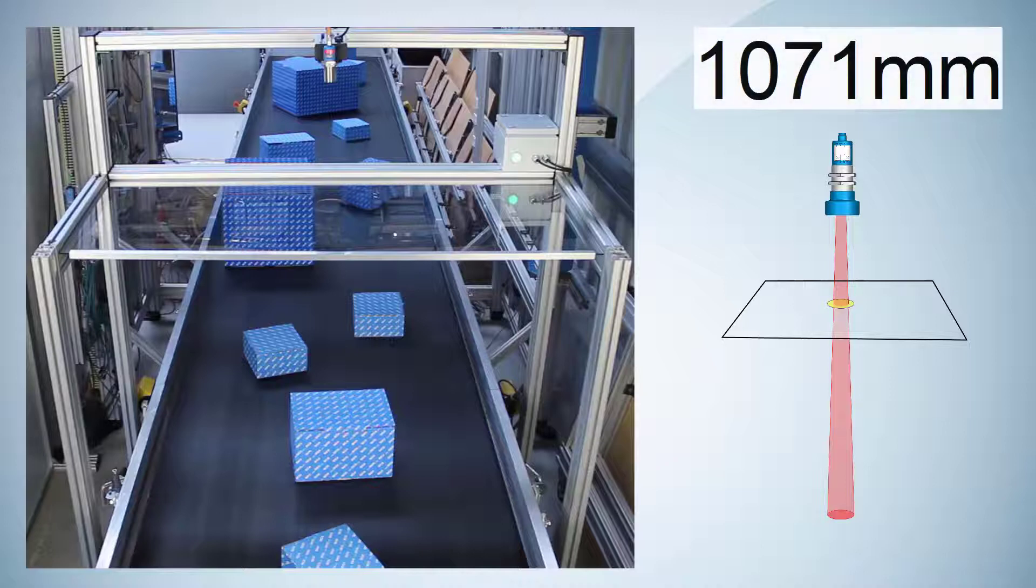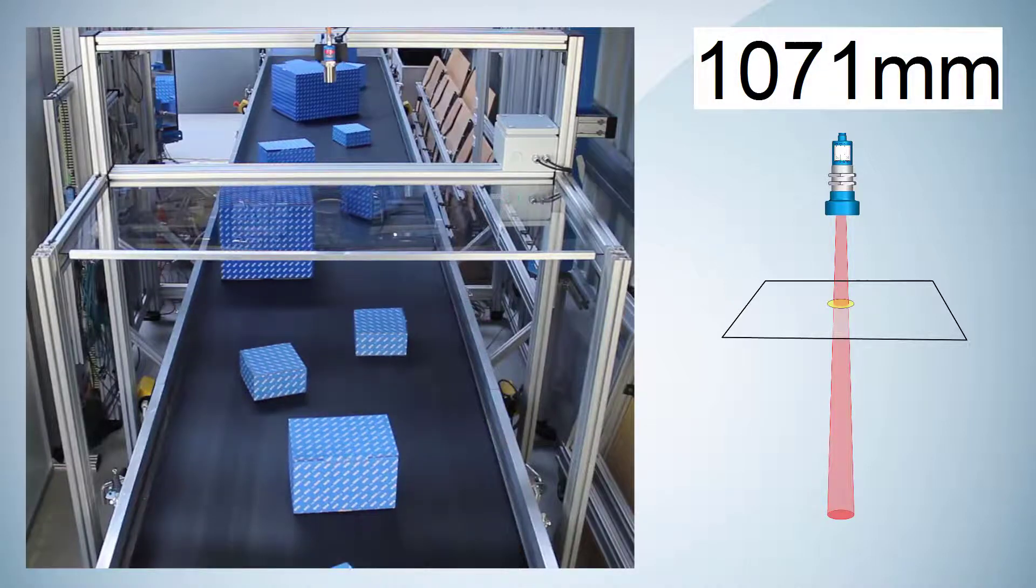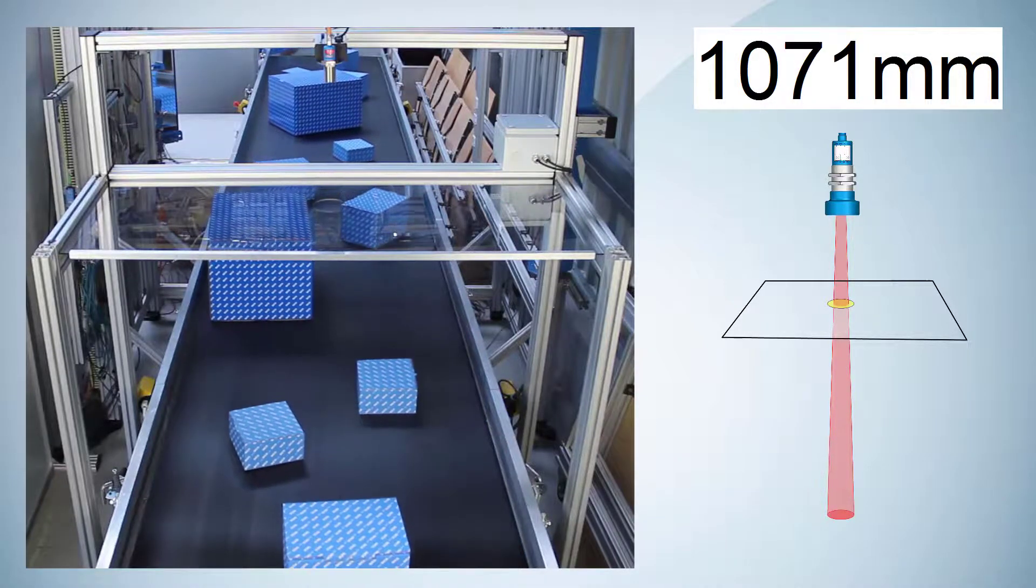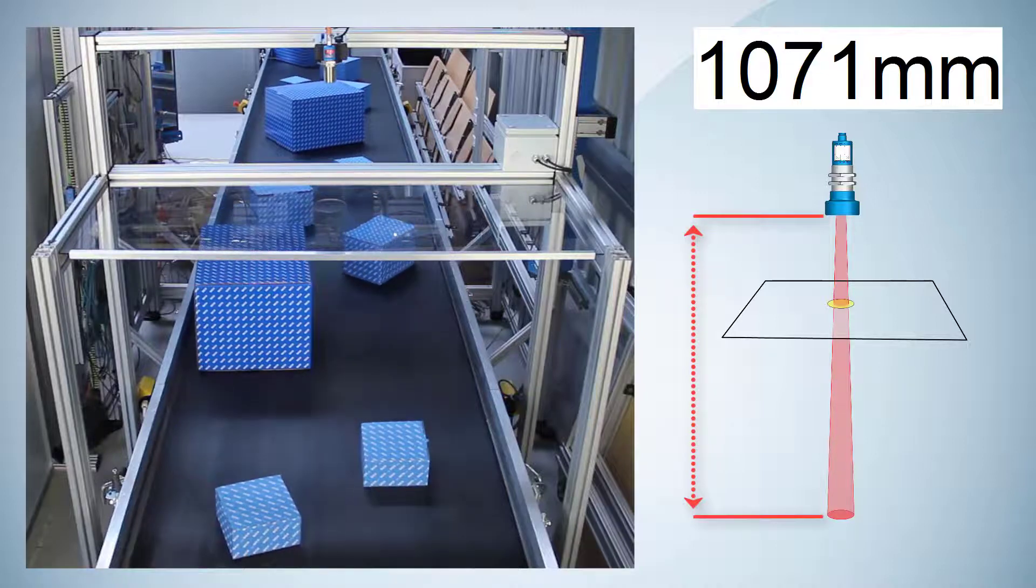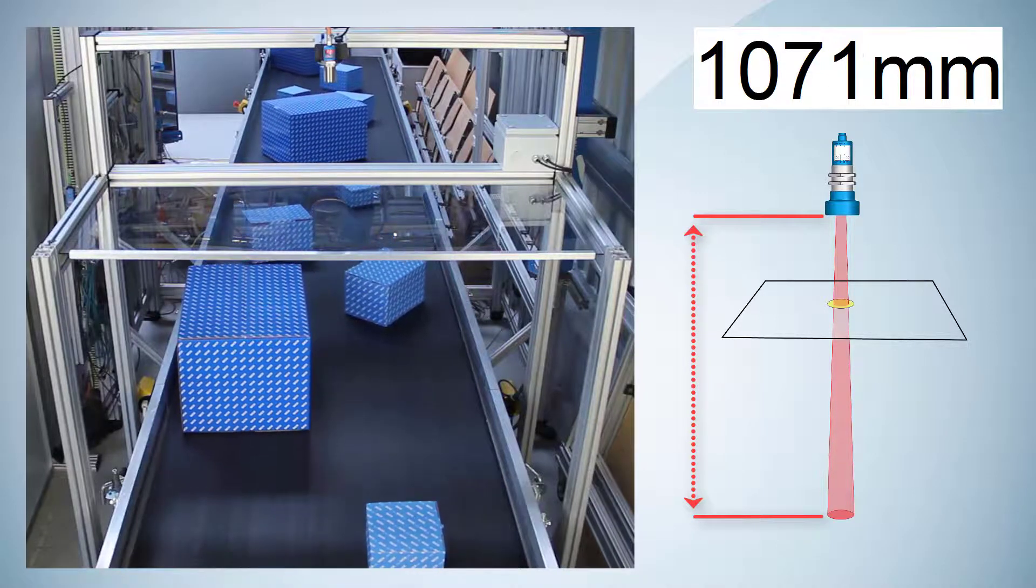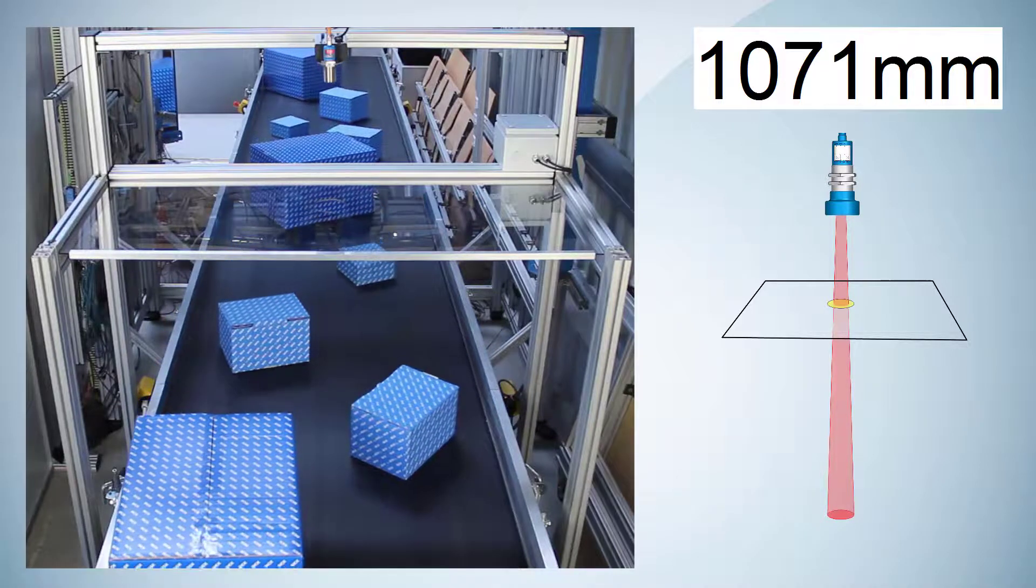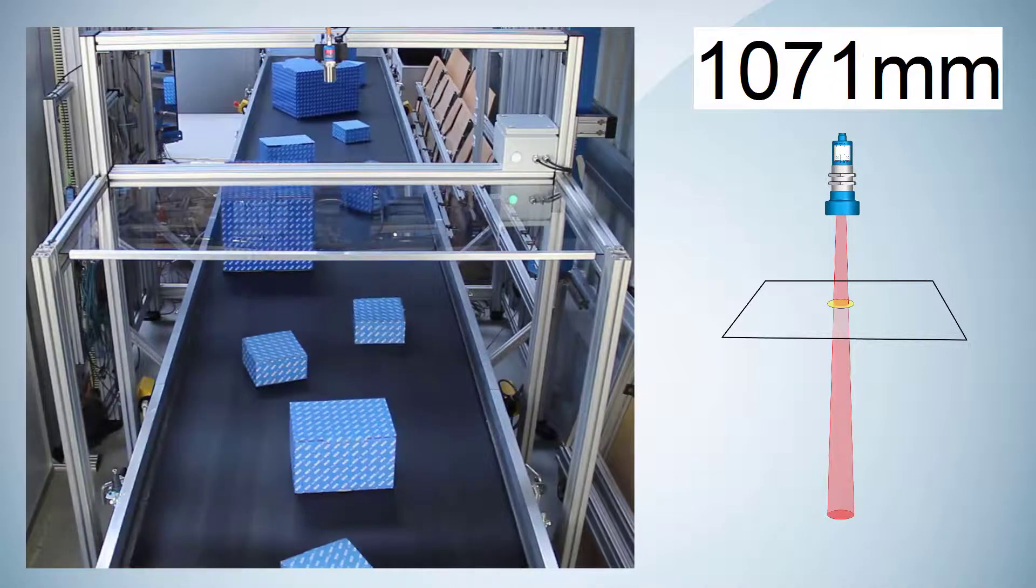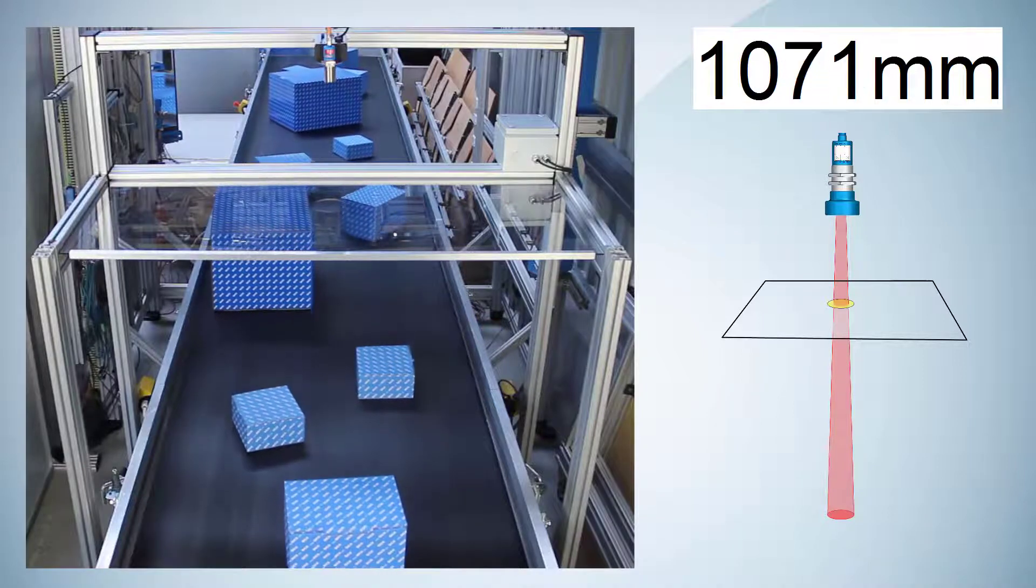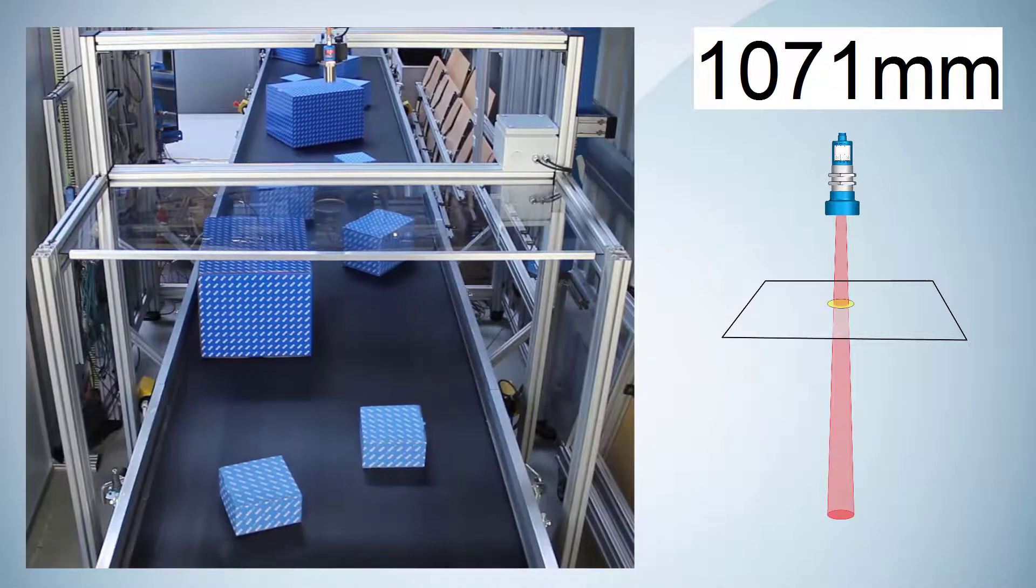The measured value now shows 1071 millimeters, which is the distance between the sensor and the conveyor belt. This means that the sound cone is narrow enough to measure through the hole in the acrylic glass. But now the sensor only detects and measures the distances to the objects placed directly under the sensor head.